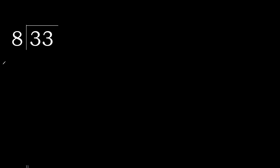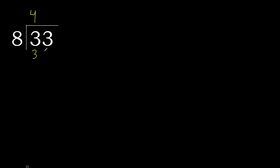33 divided by 8. 3 is less, therefore next. 33 is not less, therefore work with 33. 8 multiplied by which number is nearest to 33 but not greater? 8 multiplied by 5 is greater. Multiplied by 4 gives 32, which is not greater. Subtract 1. Next — there is no number, therefore complete.